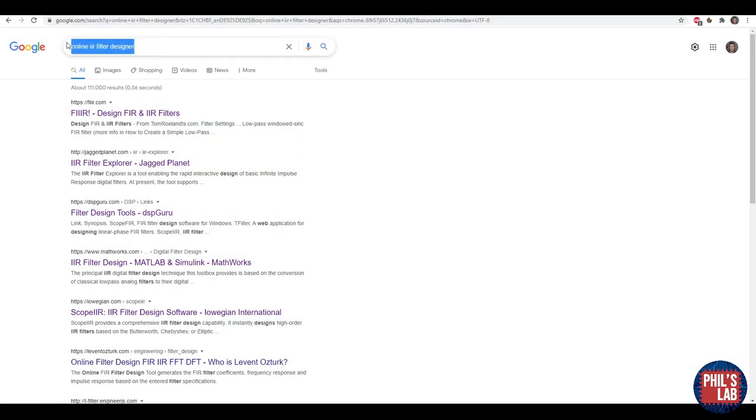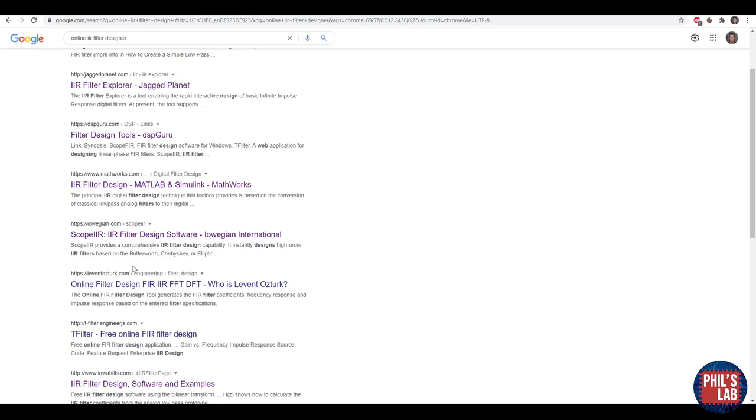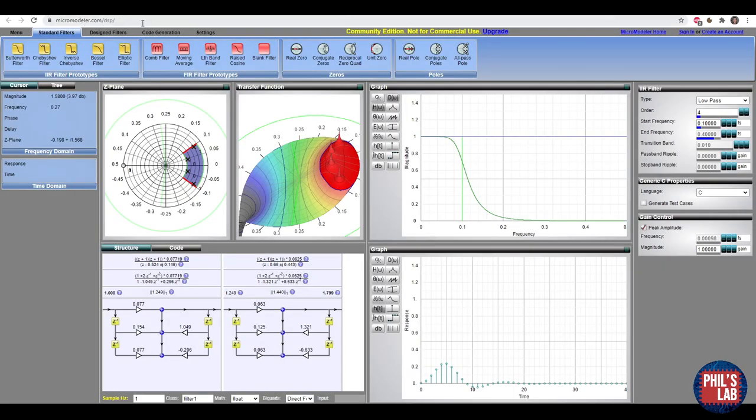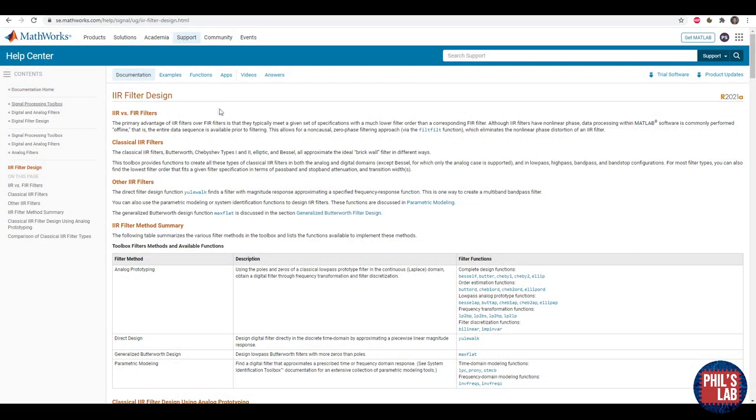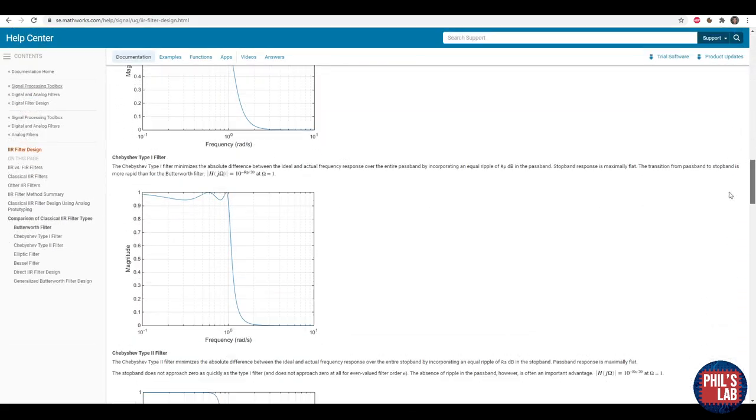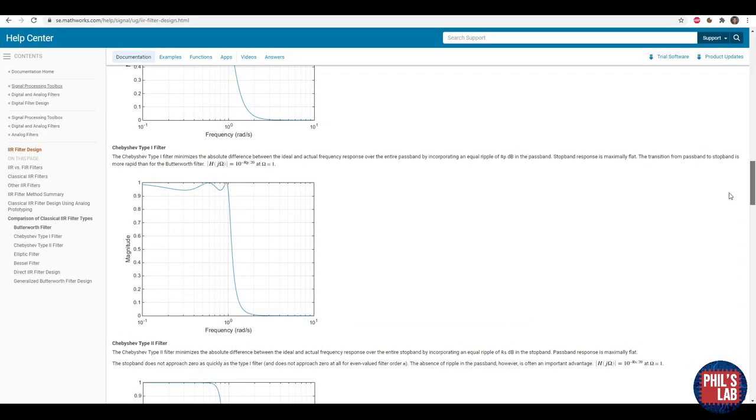A quick google search if you type in online IIR filter designer you can get quite a few different links. One of my favorite ones is micromodeler.com/dsp. Unfortunately for the basic edition it's limited to I think fourth order filter but you can choose low pass, high pass, different types of filter, you can see the response and then also the coefficients. MATLAB and their signal processing toolbox also have an IIR filter designer and that's really useful.